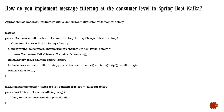How do you implement message filtering at the consumer level? We can use RecordFilterStrategy, which is part of the ConcurrentKafkaListenerContainerFactory. You define a bean for the container factory, set a filter strategy specifying which messages to skip, and create the factory. Only those messages that satisfy the filter logic will be processed. This allows you to implement custom filtering at the consumer level.